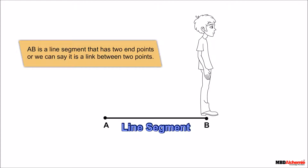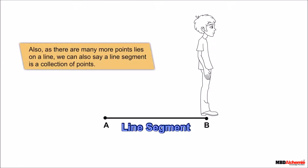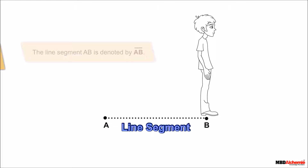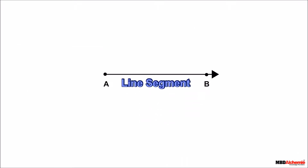We can say AB is a line segment that has two endpoints, or it is a link between two points. Also, as there are many more points lying on a line, we can say a line segment is a collection of points. The line segment AB is denoted by a line over the top of the letters. If we extend this line segment indefinitely in one direction, we get a ray.